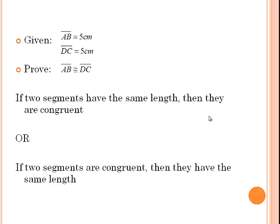Let's think about the given information and what we want to prove. We're given specific information about the lengths of those segments — each segment is 5 centimeters — and we want to prove that the segments are congruent. The second option is not a good choice because it says 'if two segments are congruent, then they have the same length,' but in the given information we are not given anything about congruence — we're given information about the length. So we want to say: if two segments have the same length, in this case 5 centimeters each, then they are congruent. Therefore, the first one is the correct option.